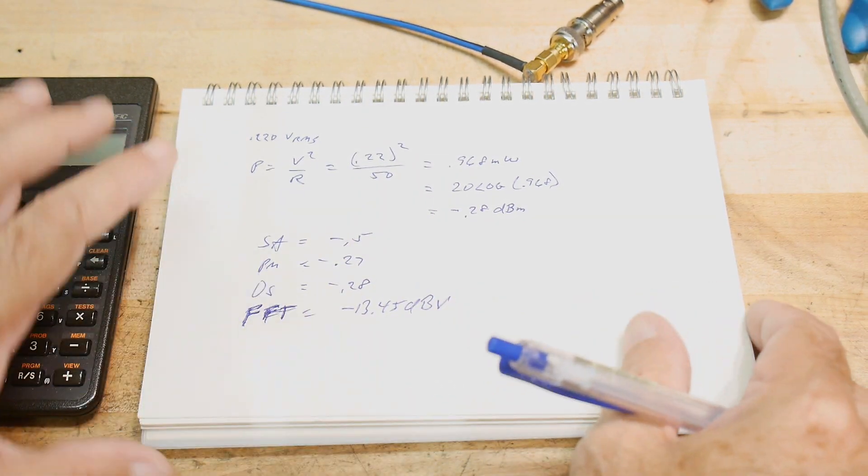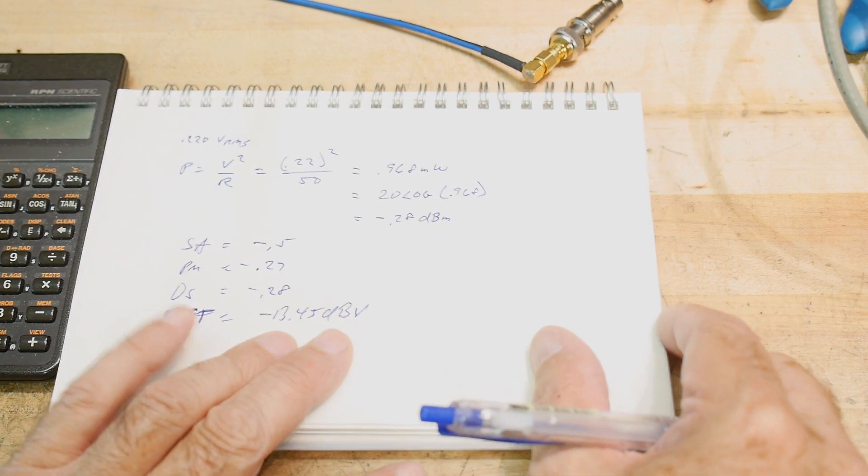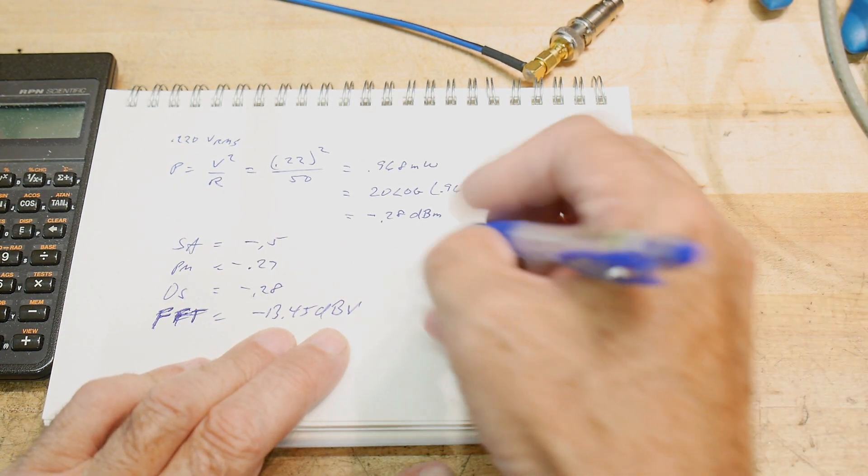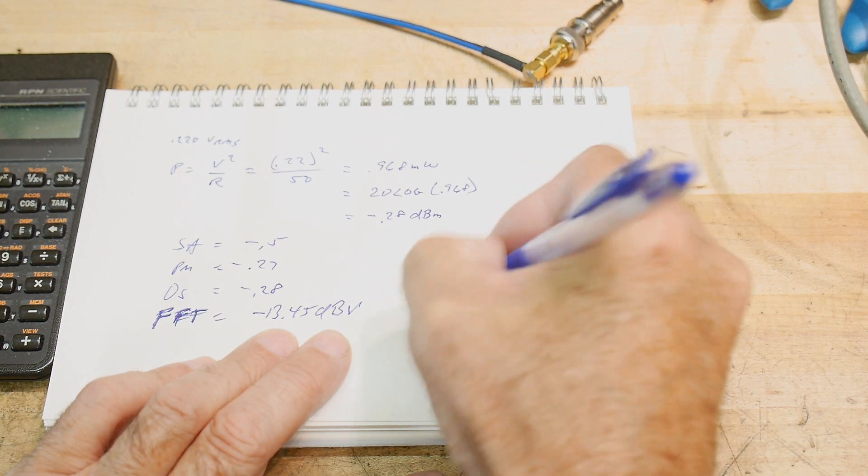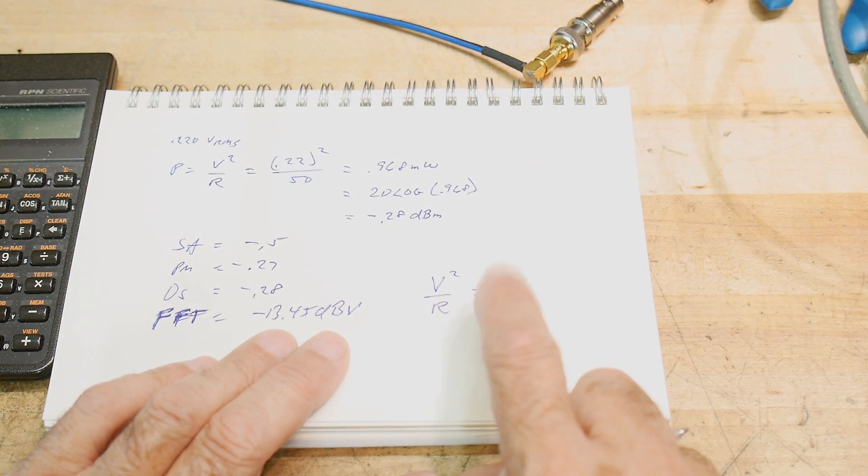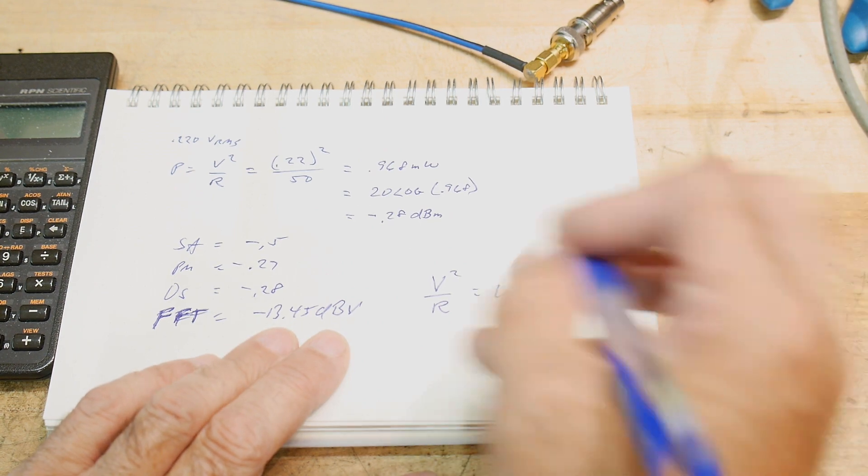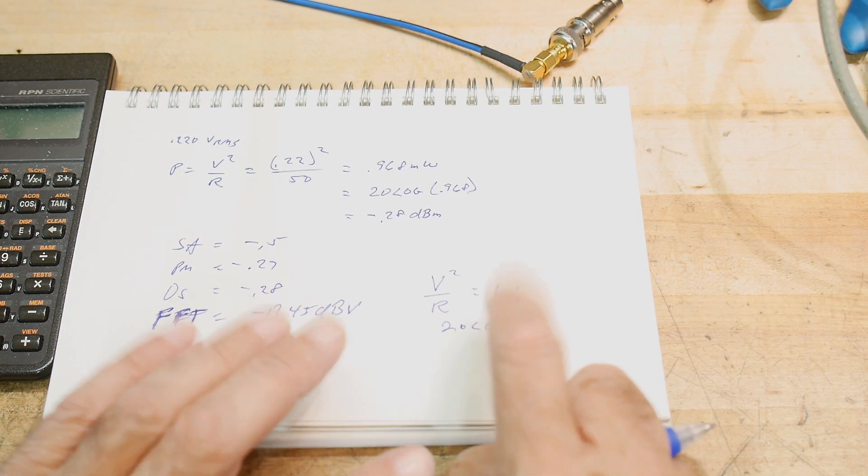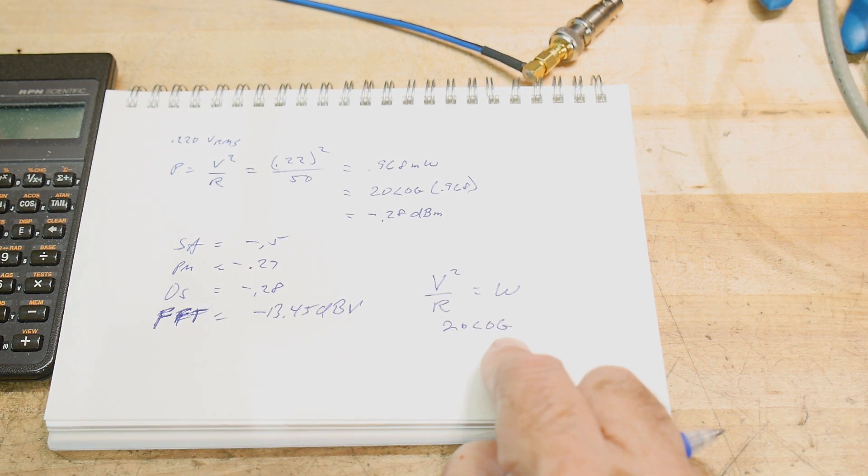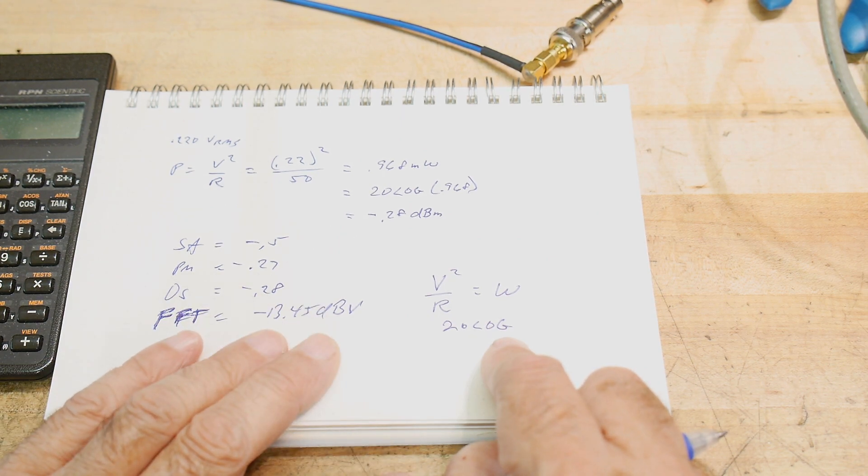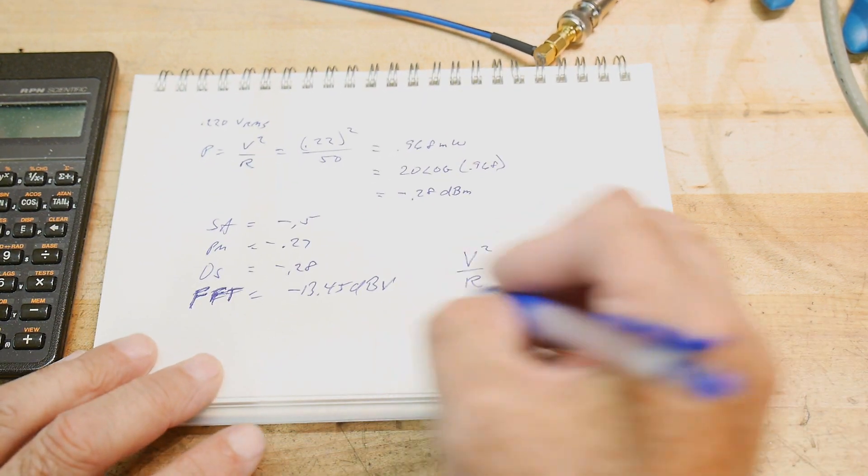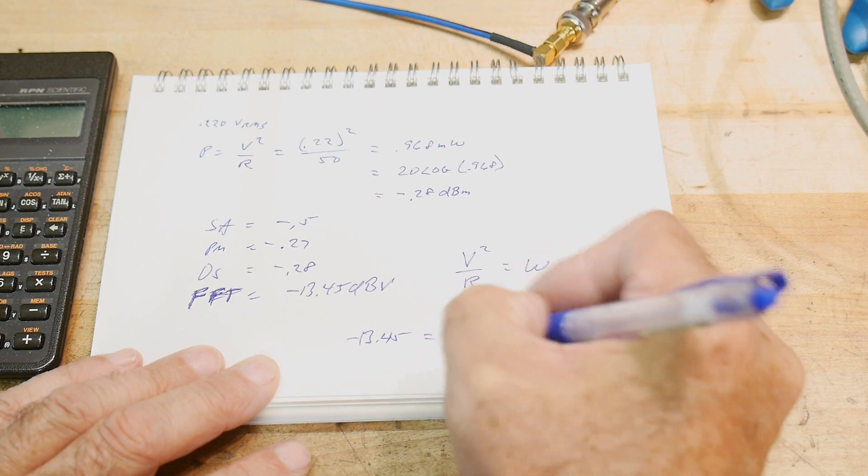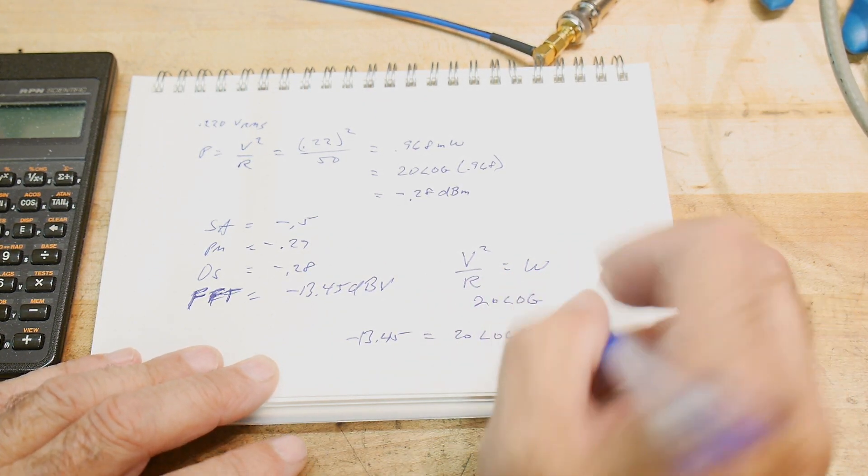So we have FFT is minus 13.45 dB volts. So there's a logarithm in there because it's DBs and there's volts in there. And we need to convert that to watts. Now volts V squared over R equals watts. And we also know that DBs are 20 times the logarithm. So we have minus 13.45 equals 20 log volts. So what are volts?